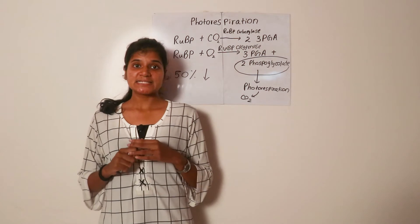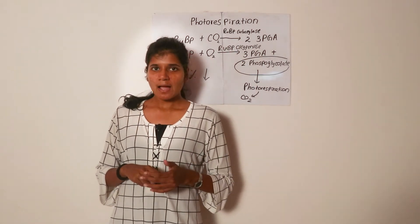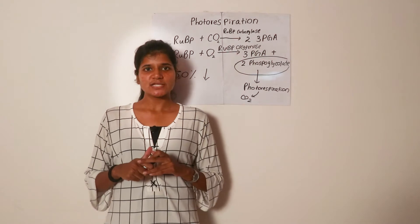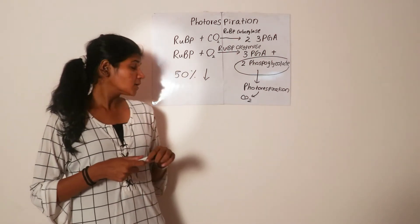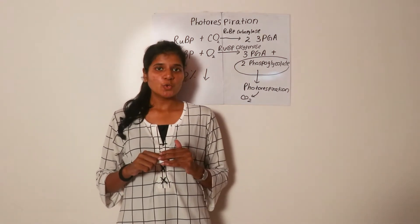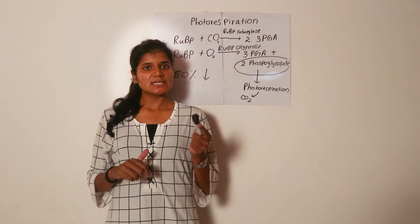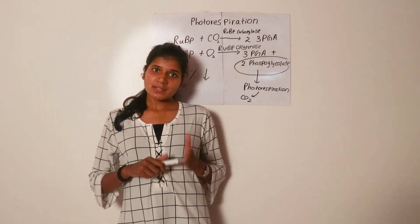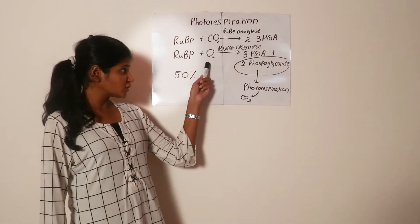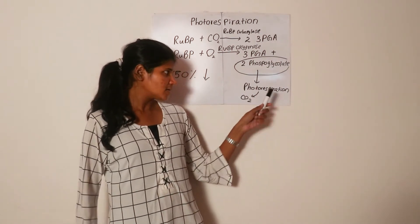If we imagine a bright sunny day in a leaf, the stomata would be half closed to conserve water. Stomata are special modified epidermal cells that regulate gas exchange in a leaf. Due to these half-closed stomata, the carbon dioxide concentration in the leaf would be low. As photosynthesis is taking place, oxygen is released in photosystem II, so oxygen concentration in the leaf would exceed the carbon dioxide concentration. Therefore, RuBP binds with oxygen, forming one molecule of 3-PGA and one molecule of 2-phosphoglycolate, leading to the photorespiratory pathway.